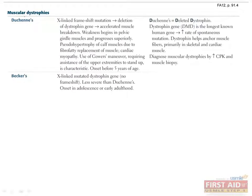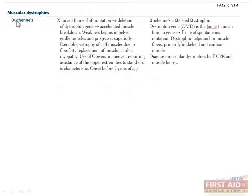There are two types of muscular dystrophies: Duchenne's and Becker's. Both are X-linked recessive and both affect the dystrophin gene. Dystrophin is the longest known human gene and therefore is the most likely to have spontaneous mutations. The dystrophin protein is cytoplasmic and is part of a larger multiprotein complex which anchors the cytoskeleton of skeletal and cardiac muscle to the extracellular matrix through the membrane. Duchenne's is the more serious of the two, often with an onset at less than five years of age, and is caused by a frameshift mutation which results in a completely non-functional protein.